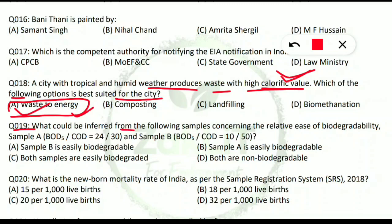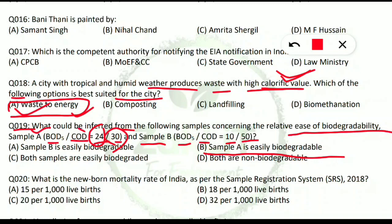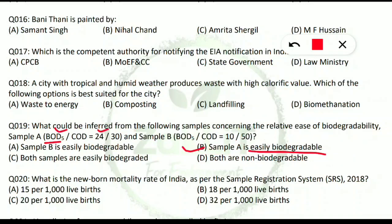Question 19: what can be inferred from samples concerning relative ease of biodegradability? Understanding BOD and COD is key here. Sample A has less COD (chemical oxygen demand, 30) than Sample B, which has more COD. Sample B has more BOD, meaning more organic compounds, meaning it is more easily biodegradable. Sample B is more easily biodegradable than Sample A.